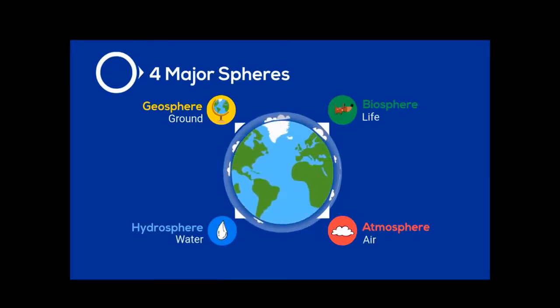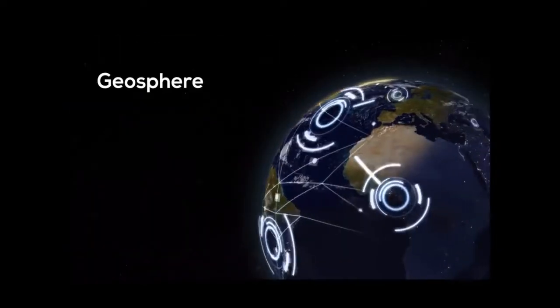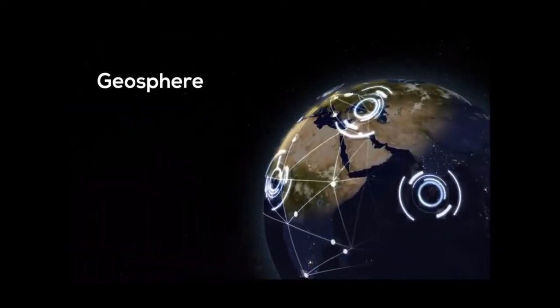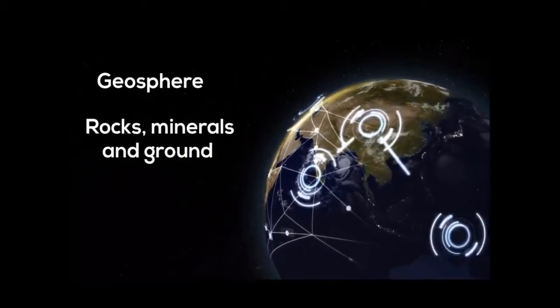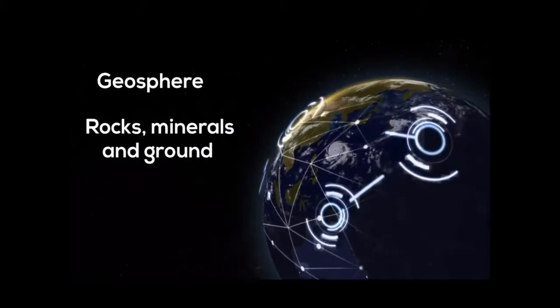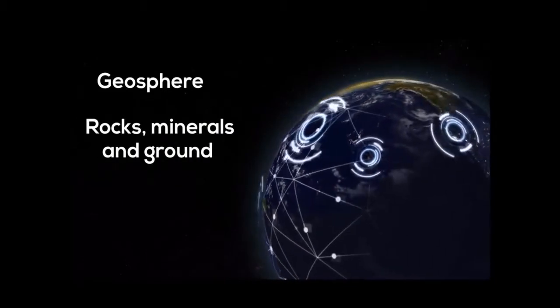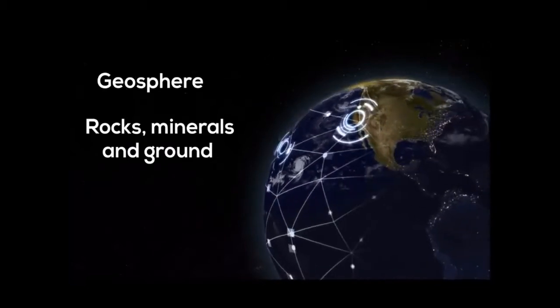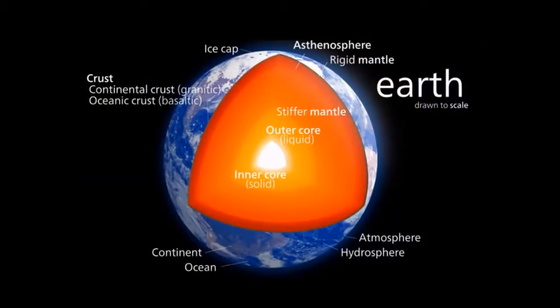We will understand each one in detail. First, we will take Geosphere. Since geo means the Earth surface or lithosphere, it describes all the rocks and minerals. It also includes the parts of the Earth's crust, mainly inside the Earth. For example, mantle and the core. In fact, it also includes the ocean floor, all rocks and fine particles on the surface of the Earth.